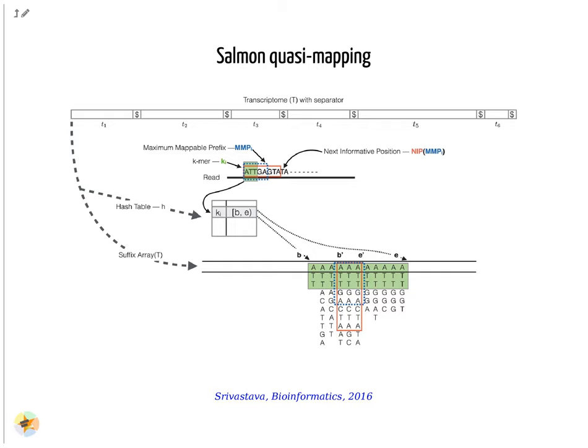This figure illustrates quasi-mapping of a read using k=3. Hash table lookup of k-mer 'att' returns the suffix array interval b and e; the current k-mer and its matching suffix intervals are colored in green. The base 'g' at position 6 has a mismatch with 'c' on reference transcripts, representing a possible sequencing error. Hence, the first five bases 'attga' form the maximal mappable prefix, and the suffix array interval of this maximal mappable prefix is b' and e. The sequence 'attgacta' in the red-colored box is the longest common prefix of the suffix array interval c and e. So the next informative position on the read is the ninth base 't'. In the end, the read in the above example most likely mapped to the suffix array at e.